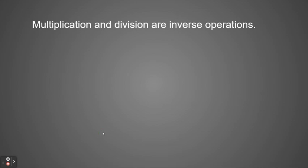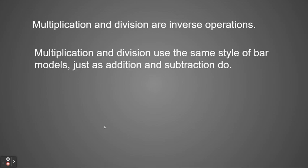So if we're talking about multiplication and division, those are inverse operations. You might think about fact families. Basically, any number that can be multiplied — two numbers together to get a product — you can take that same product and divide it to get a quotient. So they all work together as a family. Multiplication and division use the same style of bar models, just like addition and subtraction do, because they are both pairs of inverse operations.